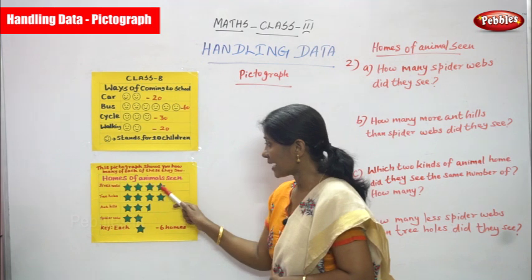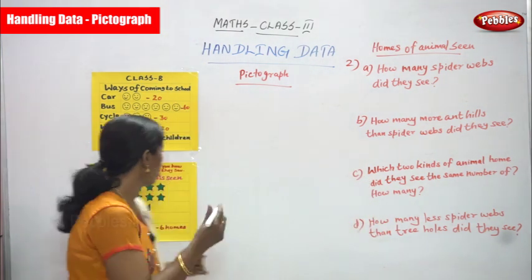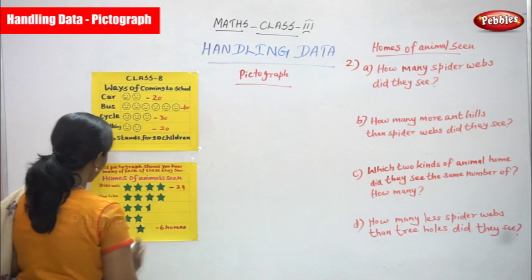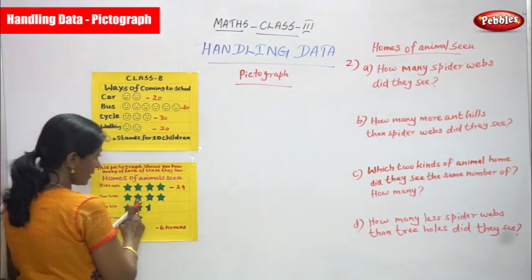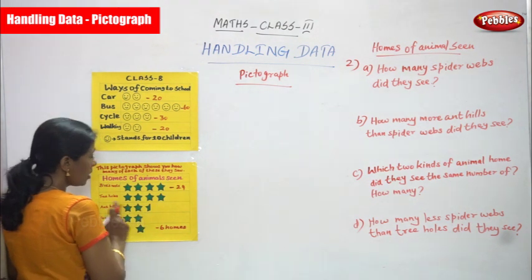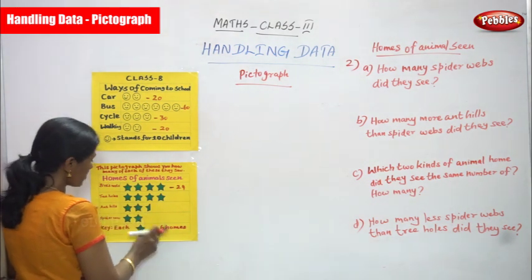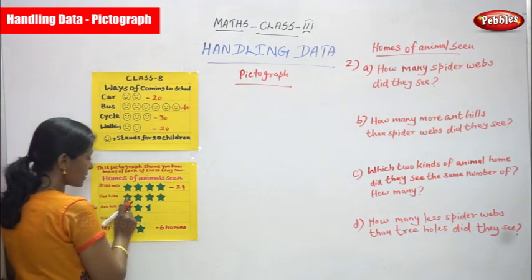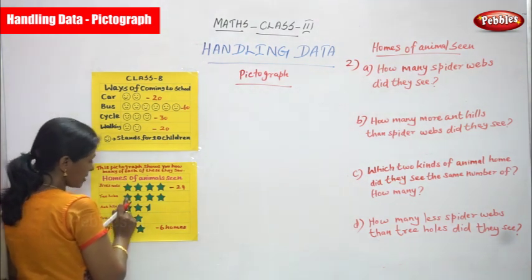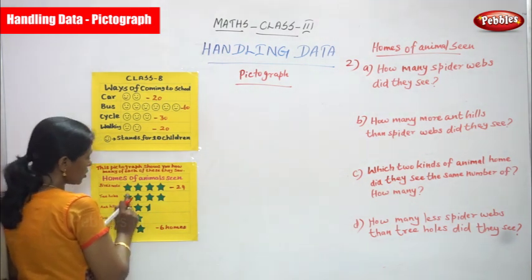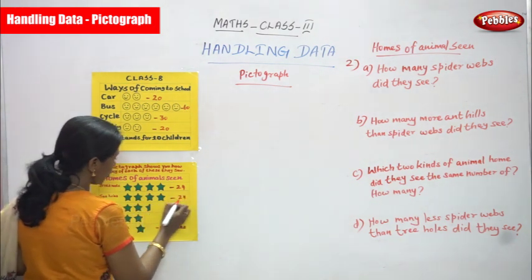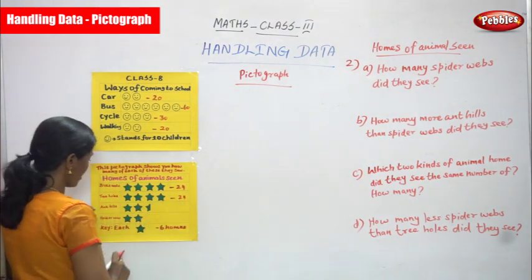Each star stands for six homes. Bird's nest: six, twelve, eighteen, and twenty-four — so bird's nest is twenty-four. Next is tree holes. Each star stands for six homes, so six, twelve, eighteen, and twenty-four — tree holes is also twenty-four.